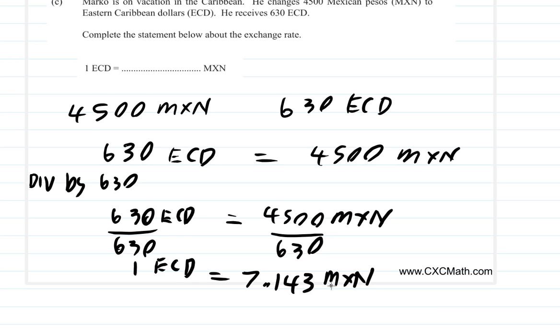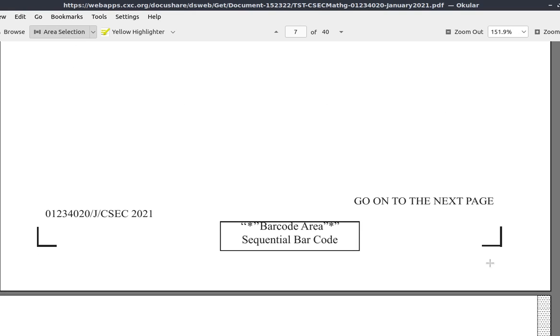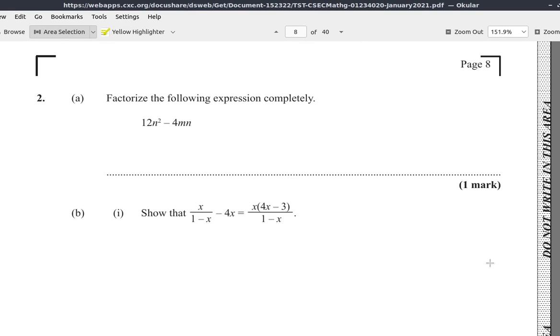Now, that's 1 ECD. Oh, it says 1 ECD equals. Oh good. It's 7. So it's 7.14 MXN. So that is it for that part of the question. And that is the end of question 1. Nice. We'll look at question 2 in our next video.